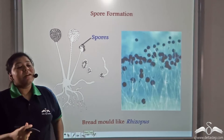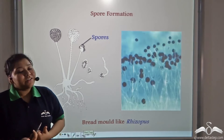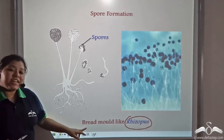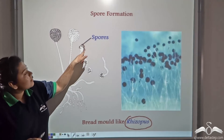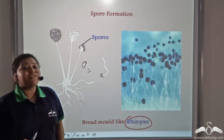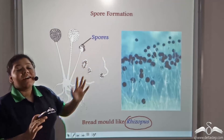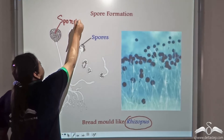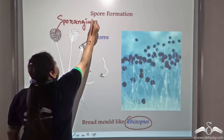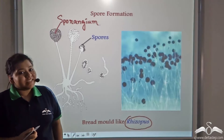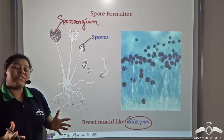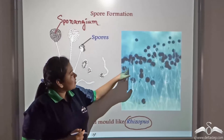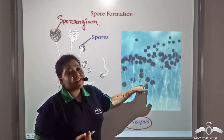Just like plasmodium secretes a cyst around itself during unfavorable conditions, similarly fungus such as rhizopus, which is a kind of bread mould, also develops spore-like structures during unfavorable conditions. These spores are enclosed in a sac-like structure known as the sporangium. On return of favorable conditions, these sporangiums burst open to release the spores into the atmosphere. This is a real-life image of a bread mould — the satellite structures you can see are the sporangiums that contain the spores.